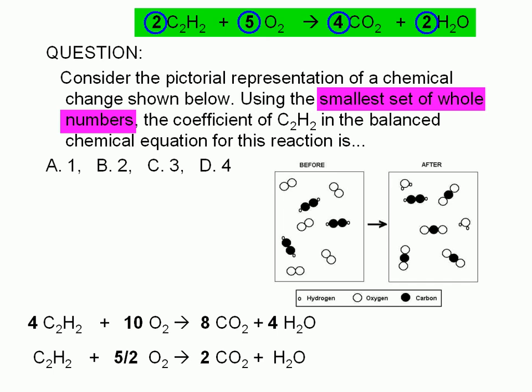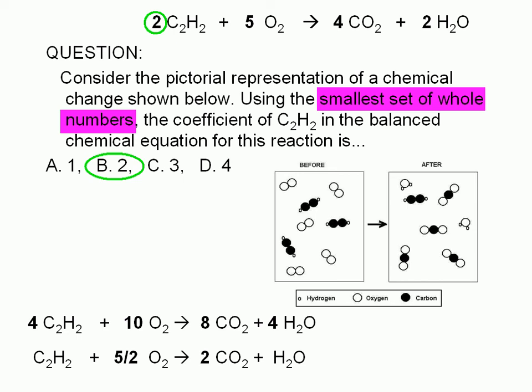Therefore, the correct answer is B. The coefficient of C2H2 is 2, provided we use the smallest set of whole number coefficients. Note that test makers are sometimes sloppy. If you see a question like this on a test and it doesn't specifically specify the smallest set of coefficients, assume that it is implied.